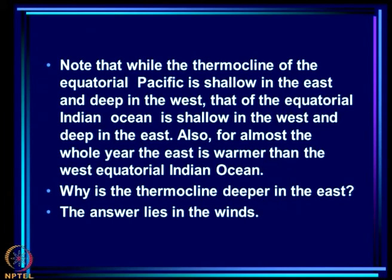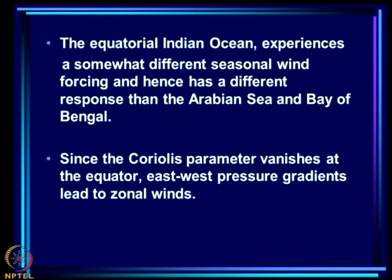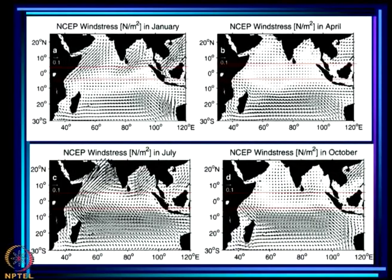Why is the thermocline deeper in the east? The answer lies in the nature of the winds — just as trade winds explained the Pacific structure. The equatorial Indian Ocean experiences a different seasonal wind forcing. At the equator, the Coriolis parameter vanishes, so east-west pressure gradients lead directly to zonal winds. The winds are very small in the equatorial belt and relatively large south of 10°S and north of 10°N, but near the coast they can be somewhat large.